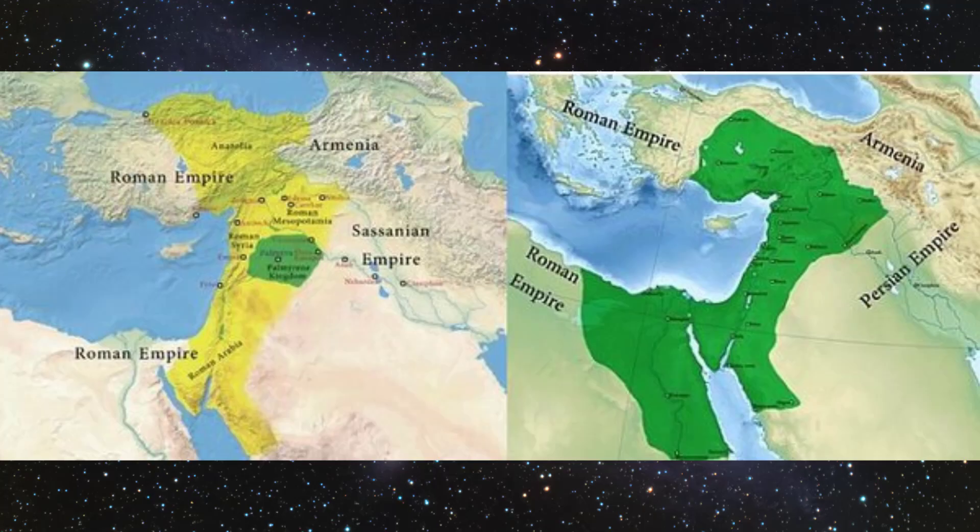Moving right along. Now we have a question from Jan. She asks, why did Zenobia invade Egypt? Jan, the invasion of Egypt has been viewed by some as Zenobia's desire to secure an alternative trade route to the Euphrates River. This was because of the war with the Sassanian Empire. However, I would add that the Euphrates route would only partially be disrupted.